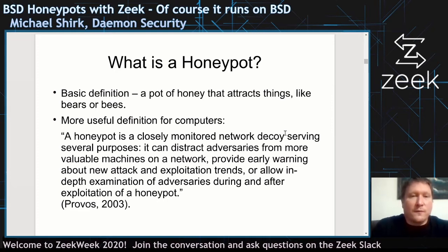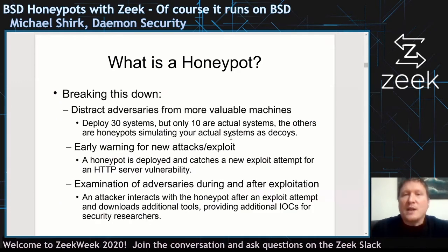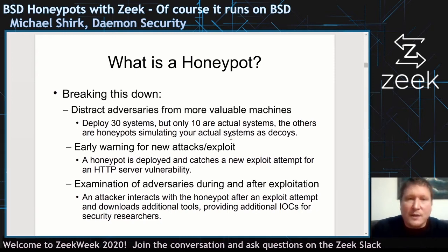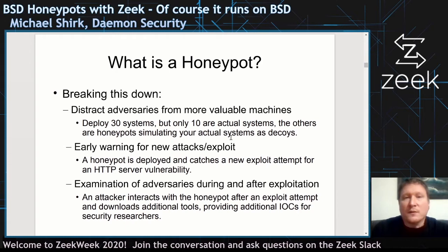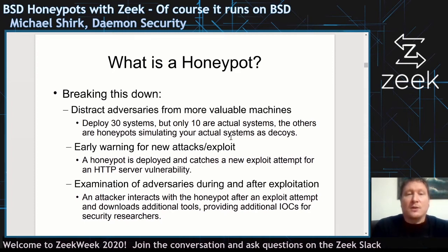Breaking that down: if I have 30 systems out there, maybe only 10 are the real systems I'm using for processing. The others are simulating actual systems as decoys, so attackers might hit those instead. For new attacks and exploits, deploy a honeypot to detect a new HTTP server vulnerability. Have it look like a real system, the attacker interacts with it, and now I can gather whether they're downloading additional tools — IOCs, TTPs for those familiar with the MITRE ATT&CK framework — for security researchers to pick up on.